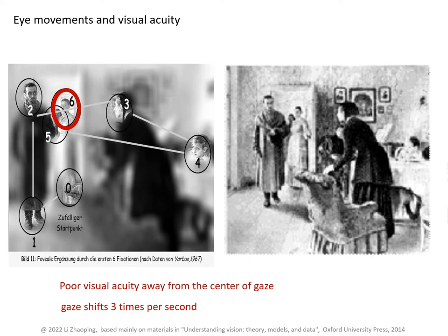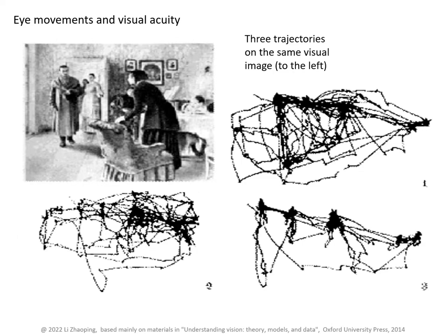This suggests that many of our gaze shifts are driven by bottom-up or involuntary mechanisms. Here are three different trajectories of gaze positions. Gaze trajectories are very affected by the internal goal of the observer — for example, whether to examine the furniture in the room or to observe relationships between people in the room.